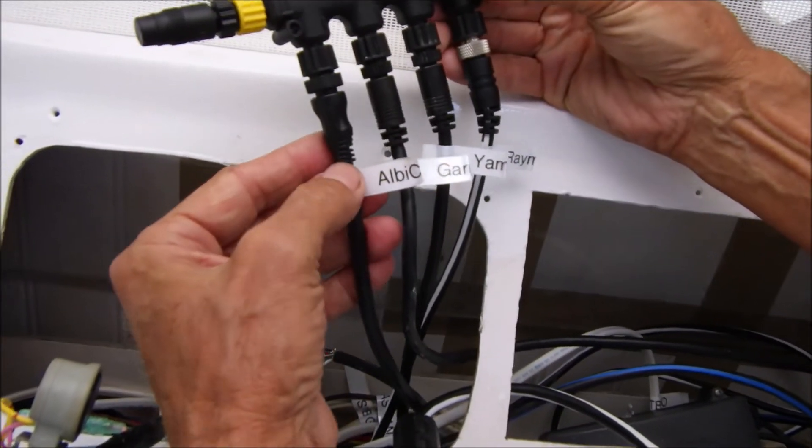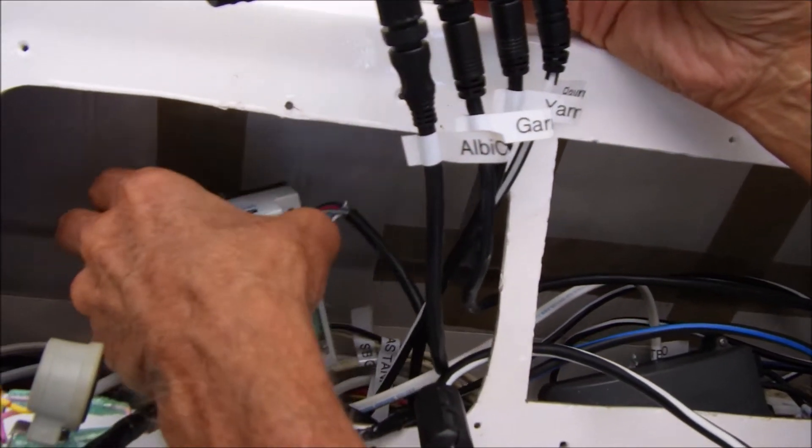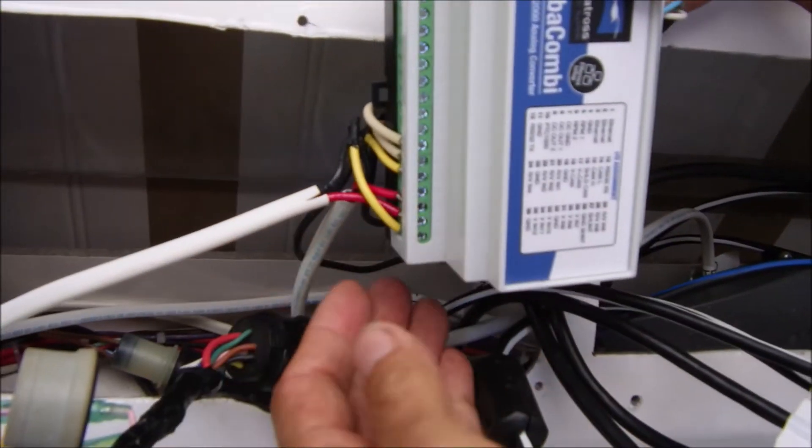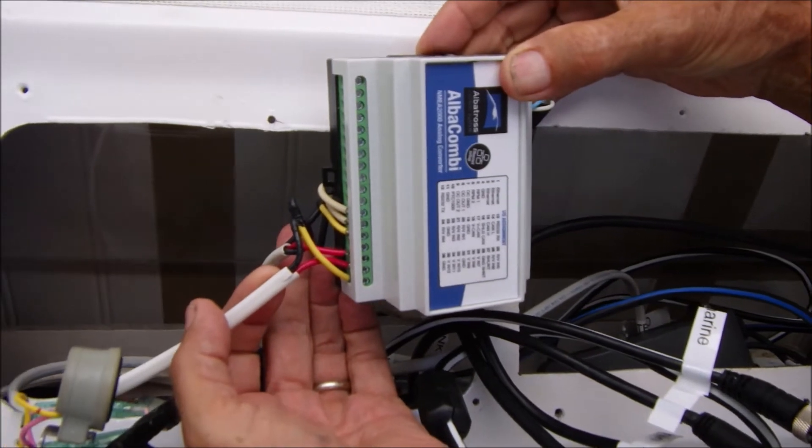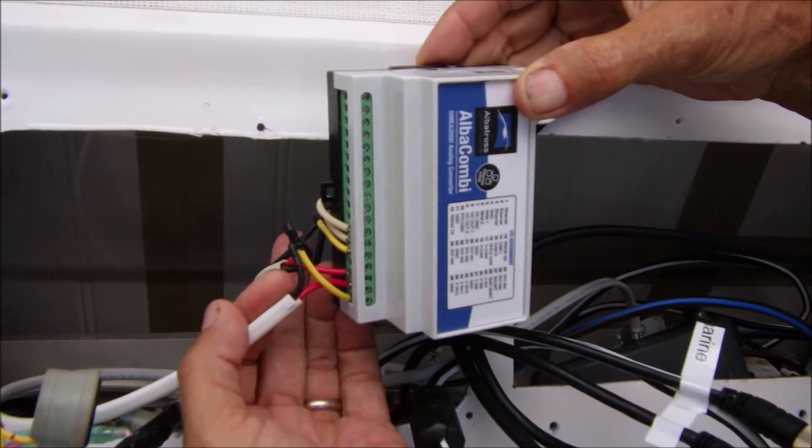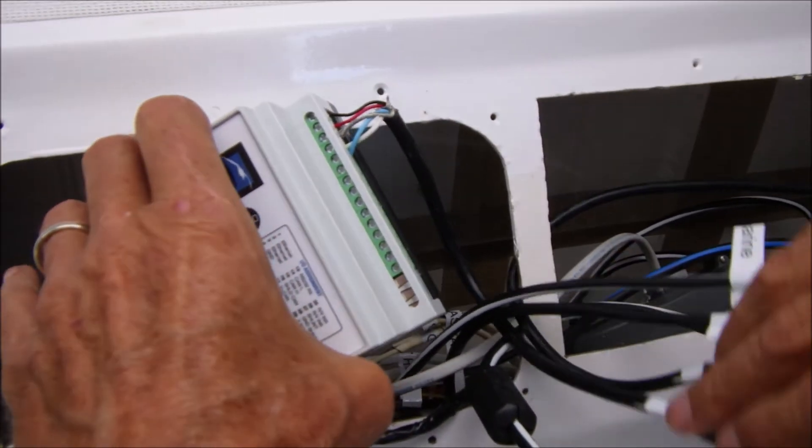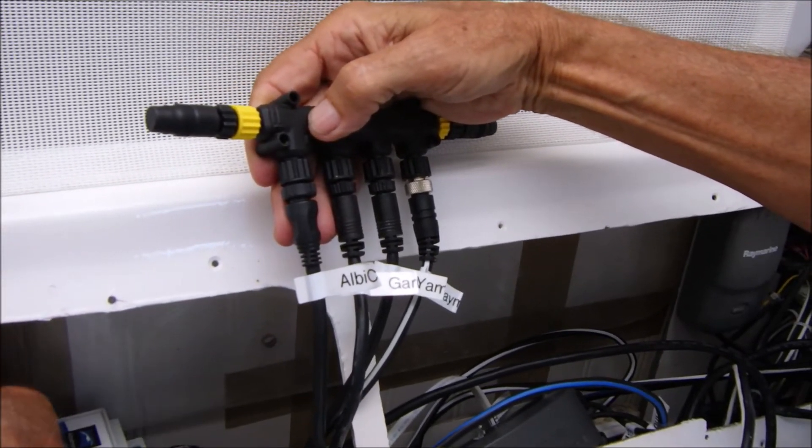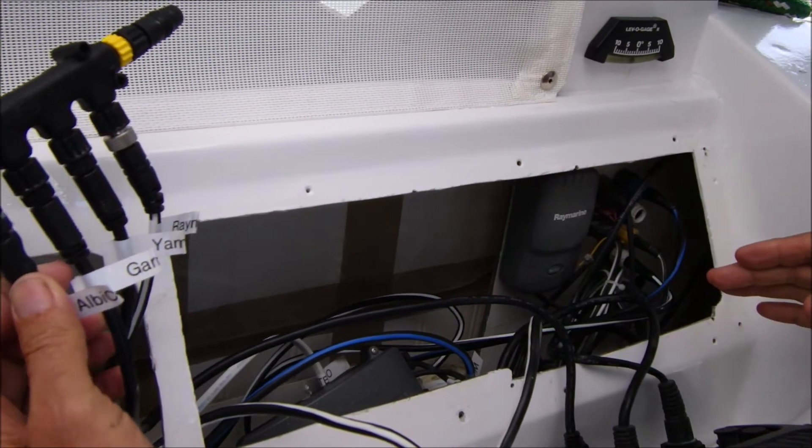And this last one here is the Albi combo. This device allows the connection of analog inputs. So I have the usual standard $50 or $60 analog gauges connected up to this device which changes it into NEMA 2000. It's very expensive. And it is powered from the NEMA backbone as well.